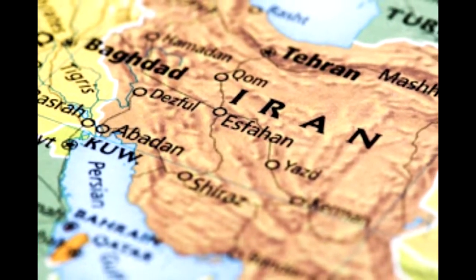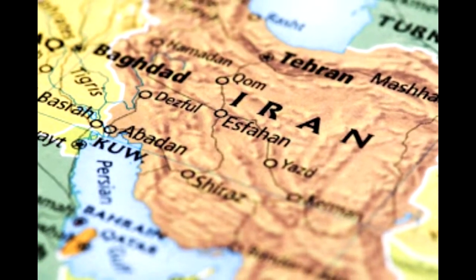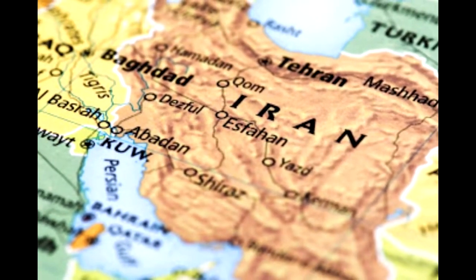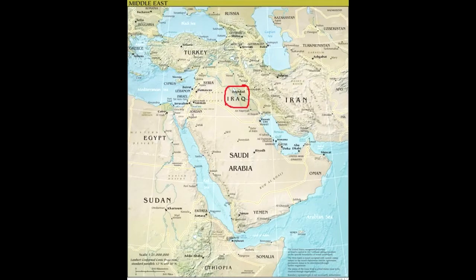Iran is located in the eastern portion of the Middle East, bordering Iraq, Turkey, Caucasus, Central Asia, Afghanistan and Pakistan.